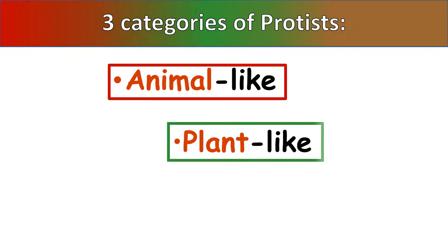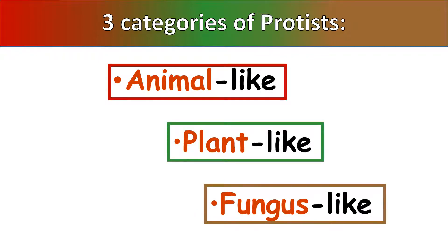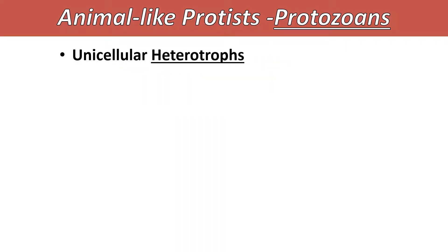The three categories that we break protists into are animal-like, plant-like, and fungus-like. They're all in there because they have similarities to the other three categories but had enough differences that they didn't fit. Animal-like protists are called protozoans. Anytime you see that 'zo,' it means animal. So protozoans are the animal-like protists.